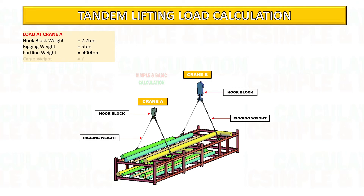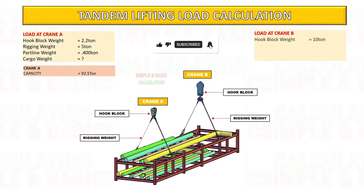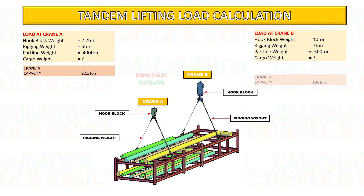See the below data for crane A and crane B: hook block, rigging, and part line weight as an example. Crane A capacity is 92.5 ton and crane B capacity is 196 ton.